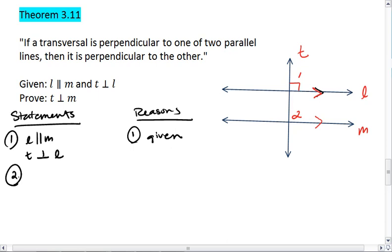Since l is parallel to m, I know that angle 1 is congruent to angle 2. That's because if you have two parallel lines cut by a transversal, then corresponding angles are congruent.